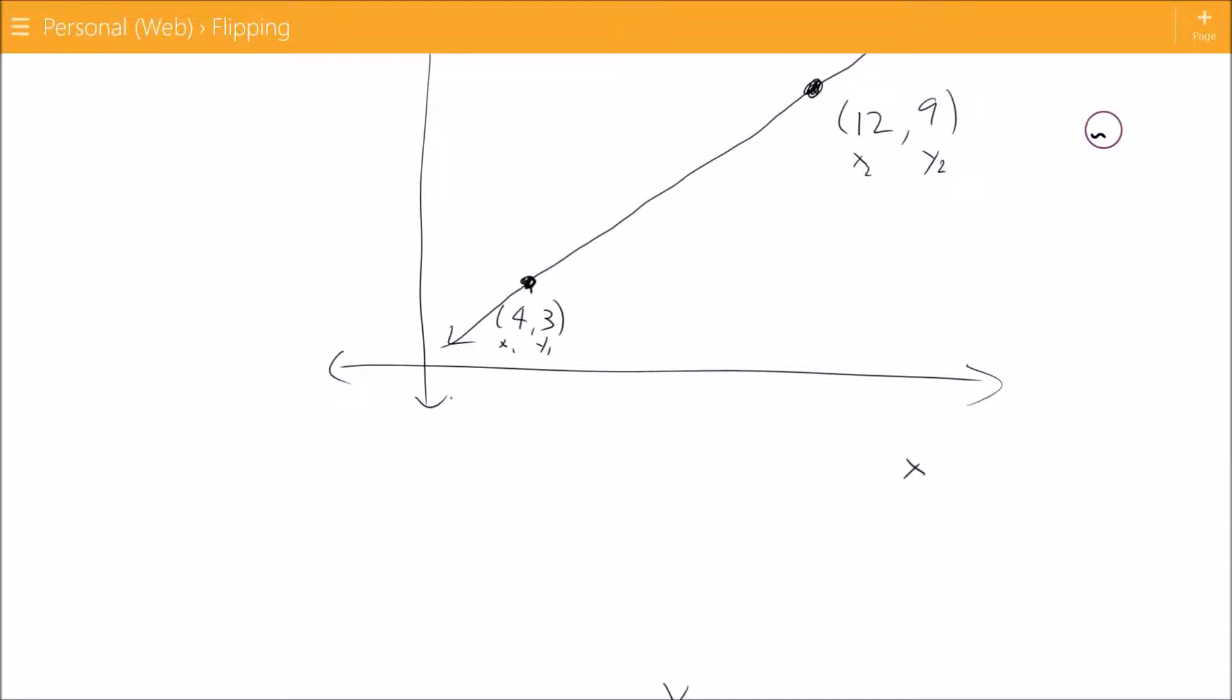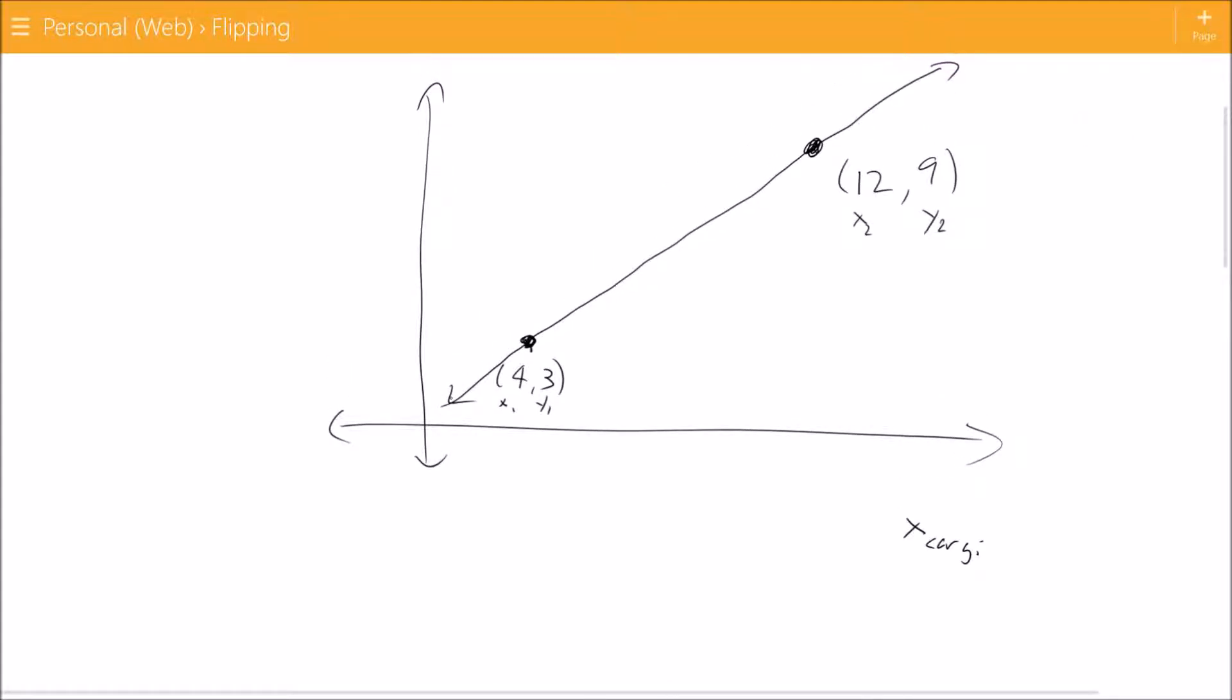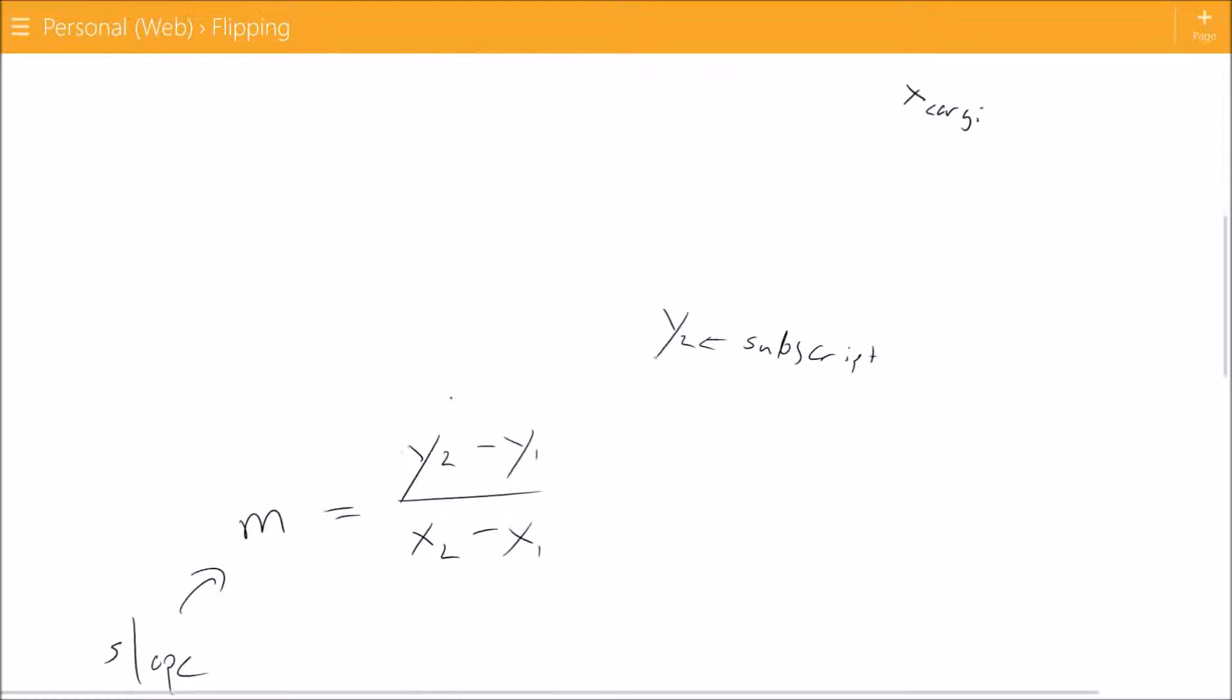If we really wanted to we could have something like x corgi. We refer to it as quite often as x sub, like x sub 1, x sub 2, x sub corgi, short for subscript.